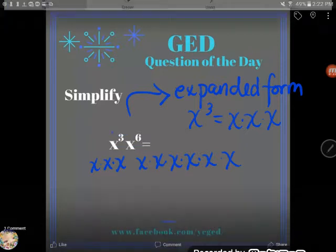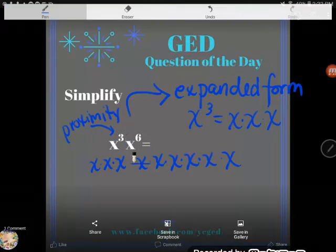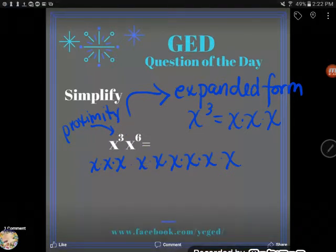Well, you might remember that in math class, proximity—if two things are shoved together—generally means multiplication. So if two things are shoved together without a symbol in between them, they're multiplying. So these three x's are multiplying with those six x's.